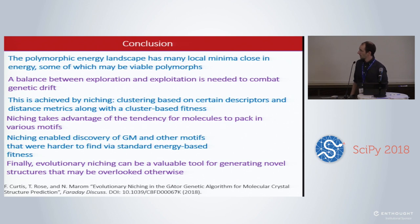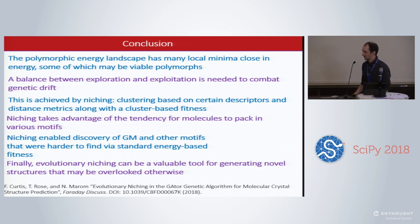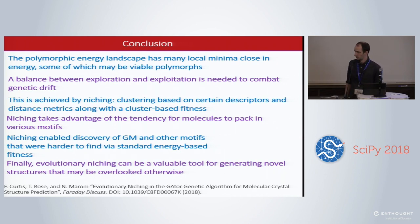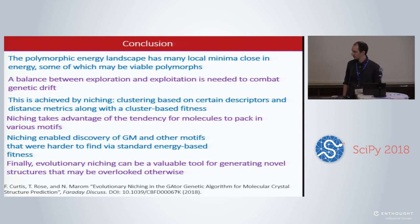In conclusion, the polymorphic energy landscape has many local minima close in energy, some of which may be viable polymorphs. A balance between exploration and exploitation is needed to combat genetic drift. This is achieved by niching — clustering based on certain descriptors and distance metrics along with a cluster-based fitness. Niching takes advantage of the tendency of molecules to pack in various motifs, and enabled discovery of the global minimum and other motifs that are harder to find with standard energy-based fitness. Evolutionary niching can be used as a viable tool for generating novel structures that may be overlooked otherwise.